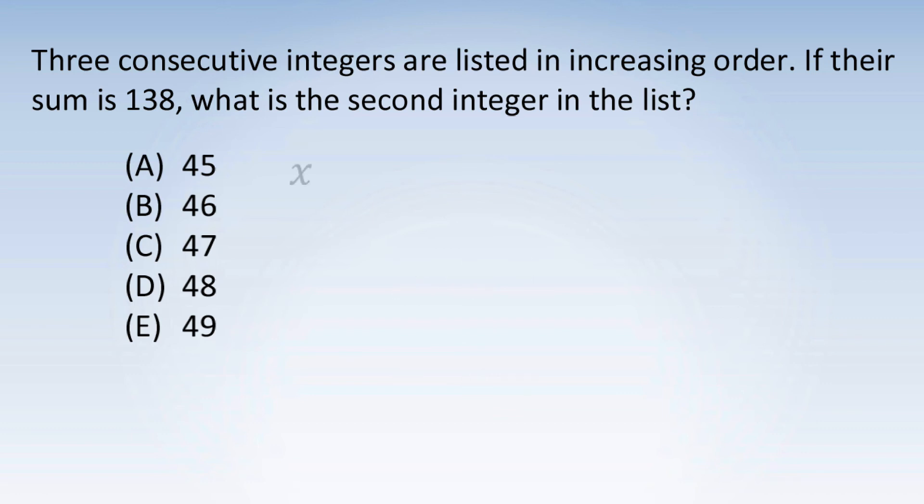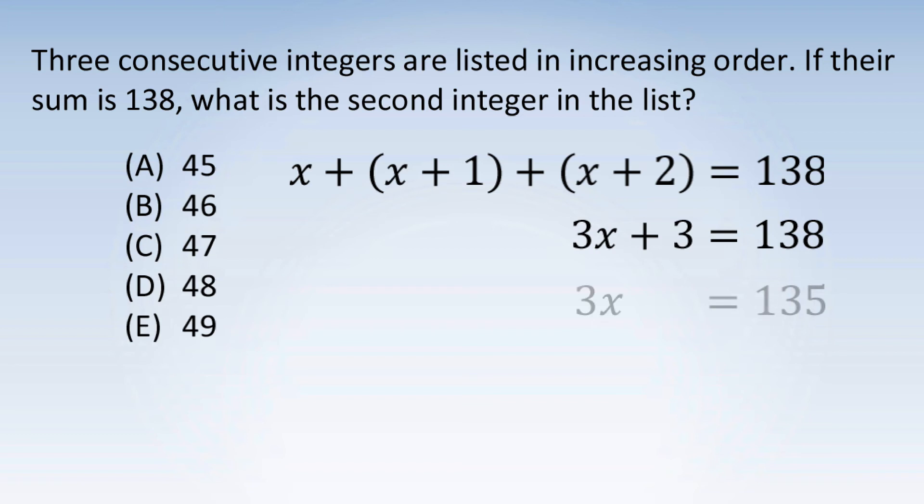So we have x plus x plus 1 plus x plus 2 equals 138. Combining like terms on the left, we get 3x plus 3 equals 138. We now subtract 3 from each side of this equation to get 3x equals 135, and we divide each side of this equation by 3 to get x equals 45.